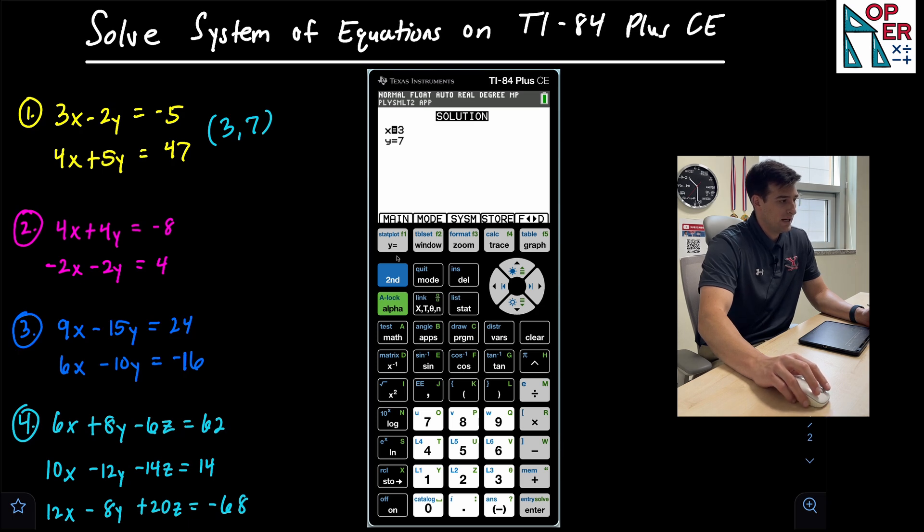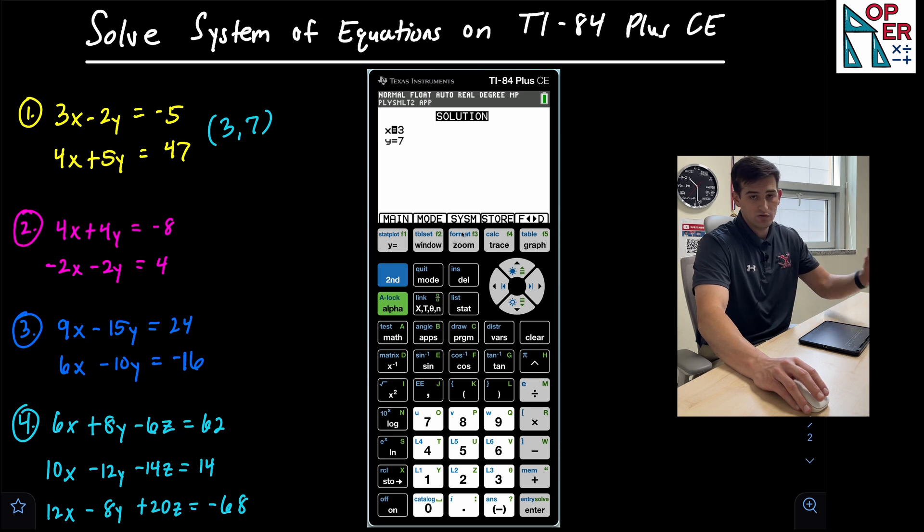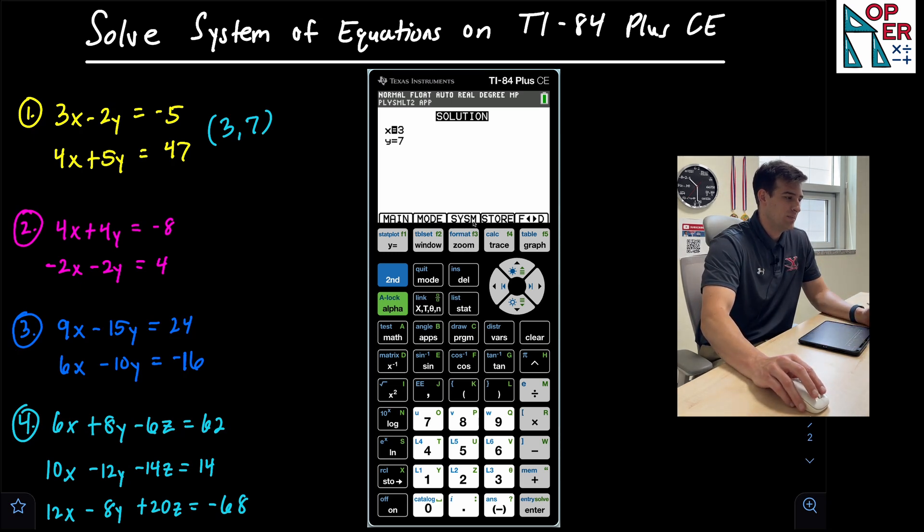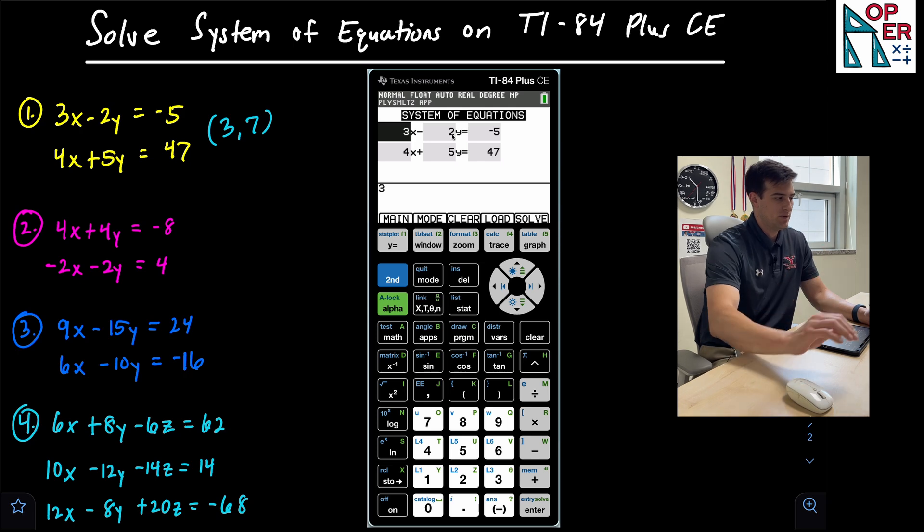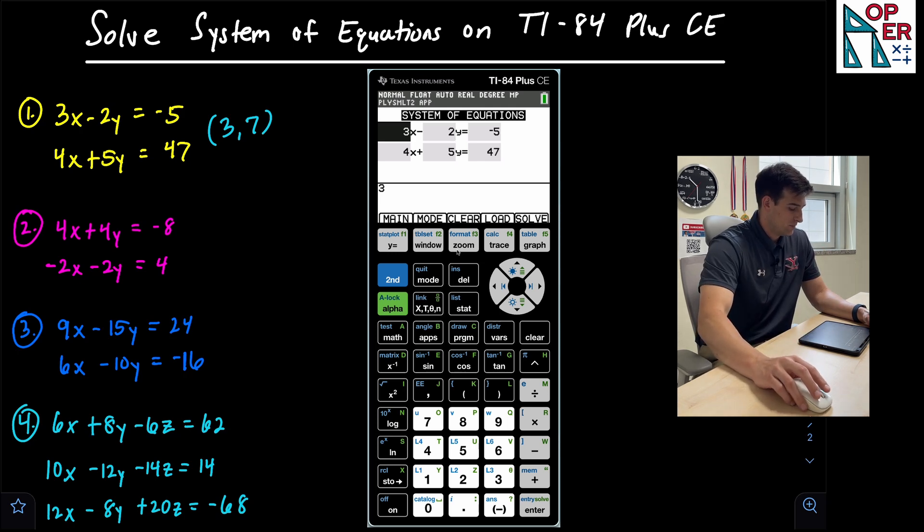So now if I want to go back and do this again, let's say I want to move on to example number two. The S Y S M tab corresponds to the zoom button. So if I hit zoom, it just takes me back to where I was. And now I can type in my next example.